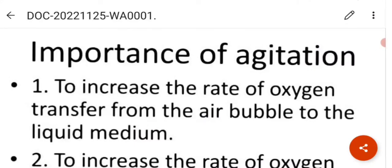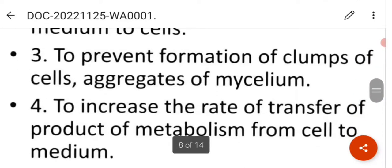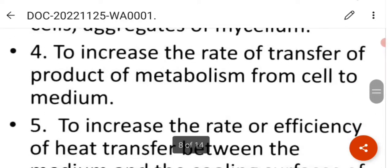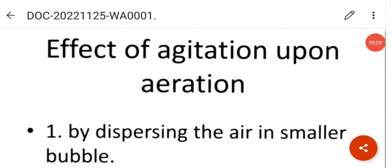What is the importance of agitation? Agitation is important to increase the rate of oxygen transfer from the air bubble to the liquid media, to increase the rate of oxygen and nutrients transfer from the medium to the cells, to prevent the formation of clumps of cells or aggregates of mycelium, to increase the rate of transfer of product of metabolism from the cell to the medium, and to increase the rate or efficiency of heat transfer between the medium and cooling surfaces of the fermenters.